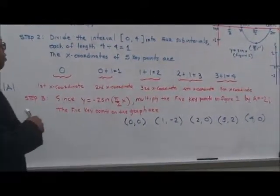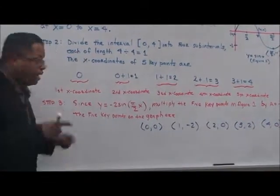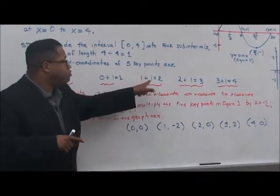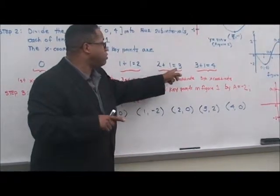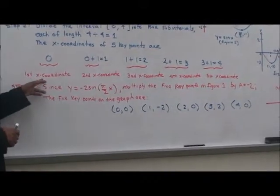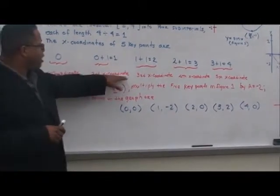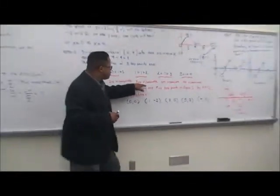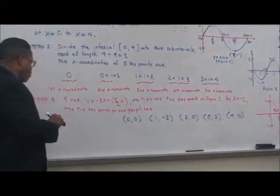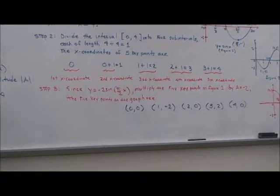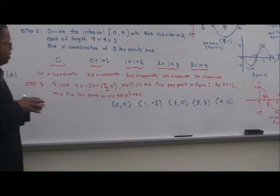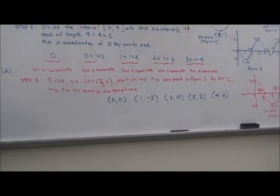The x-coordinates of the five key points are: 0, 0 plus 1 equals 1, 1 plus 1 equals 2, 2 plus 1 equals 3, and 3 plus 1 equals 4, respectively. These are the first through fifth x-coordinates. If you need to pause the video to gather your thoughts and take notes, please do so.